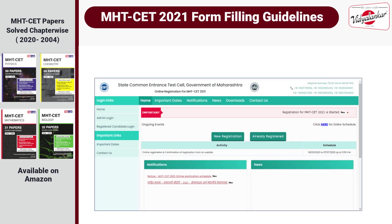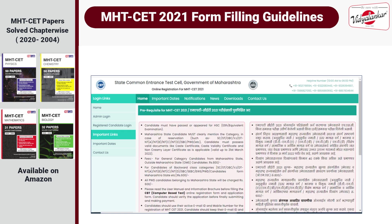When you visit mahacet.org, click on MHT-CET 2021. To start the online form filling process, click on New Registration. Students, please read all the instructions carefully. You may also read the information brochure available on the website before you proceed with the online registration form.